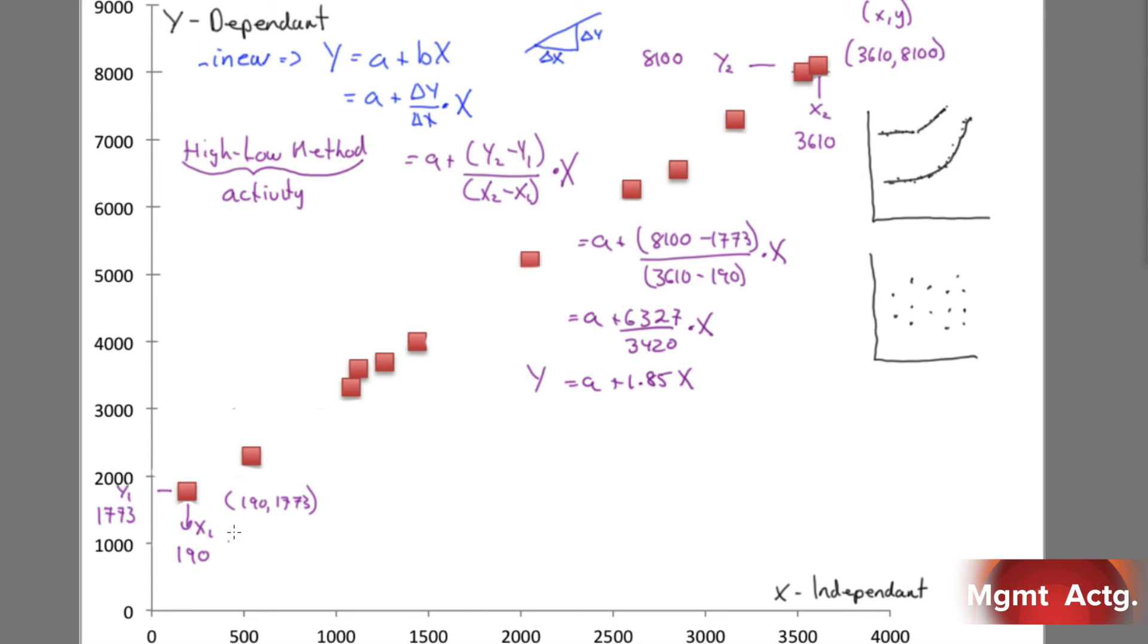We don't have our a yet. Well, if you look at this very carefully, we actually do have our a. Look over here - we have a coordinate, our x and our y coordinate. So here's our y: 1773 equals a plus 1.85, and here's our x: 190. Doesn't take much to see that we can simply just solve for a. So a will equal 1421.50. Here I just went right to the answer but that's okay. So now we have a.